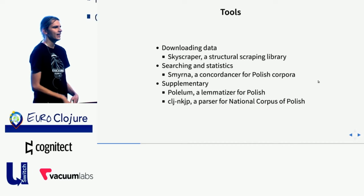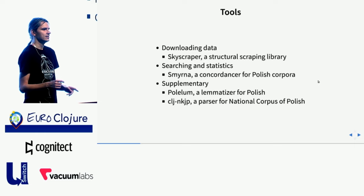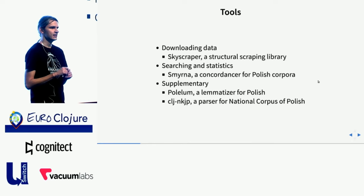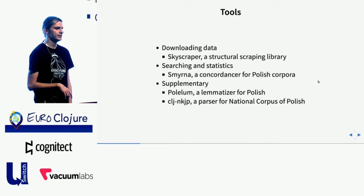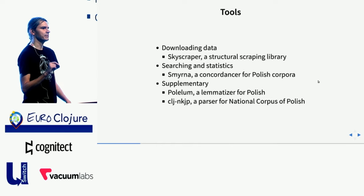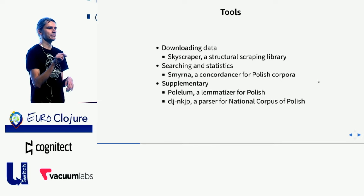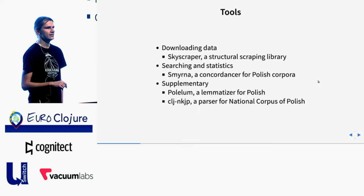The tools: downloading P4 is based on Skyscraper, which is a Clojure library for scraping whole sites. For searching and doing some analysis, I have Smyrna, which is a concordance or search tool for corpora in Polish that supports HTML files. Smyrna uses supplementary libraries: a lemmatizer for Polish that converts each word to its base grammatical form, and CLJ-NKP, which is used by Polarum — a library for parsing the publicly available subcorpus of the national corpus of Polish.